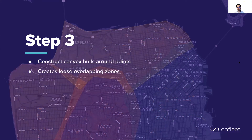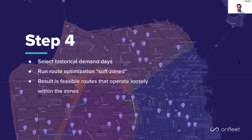In the next step, we're going to construct convex hulls around these allocated demand points. This is going to create overlapping zones — we can think of these like big overlapping colored rubber bands around all of our demand. Now we need to run route optimization constrained to these zones, using the zones we just created, and run routes for historical demand.